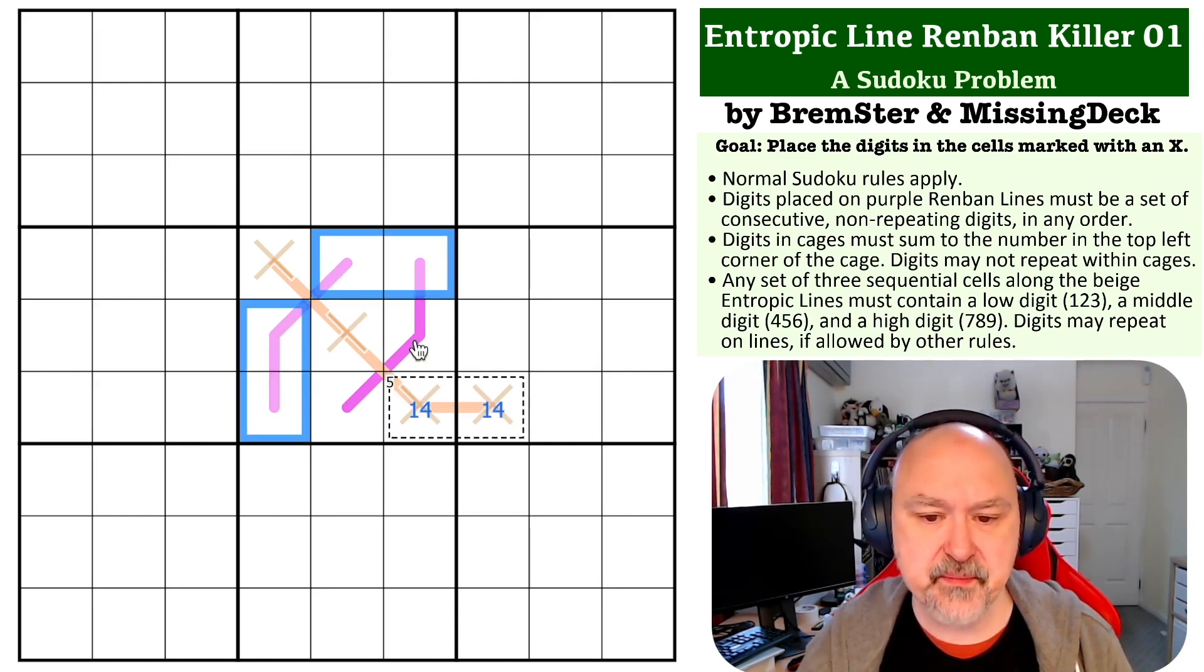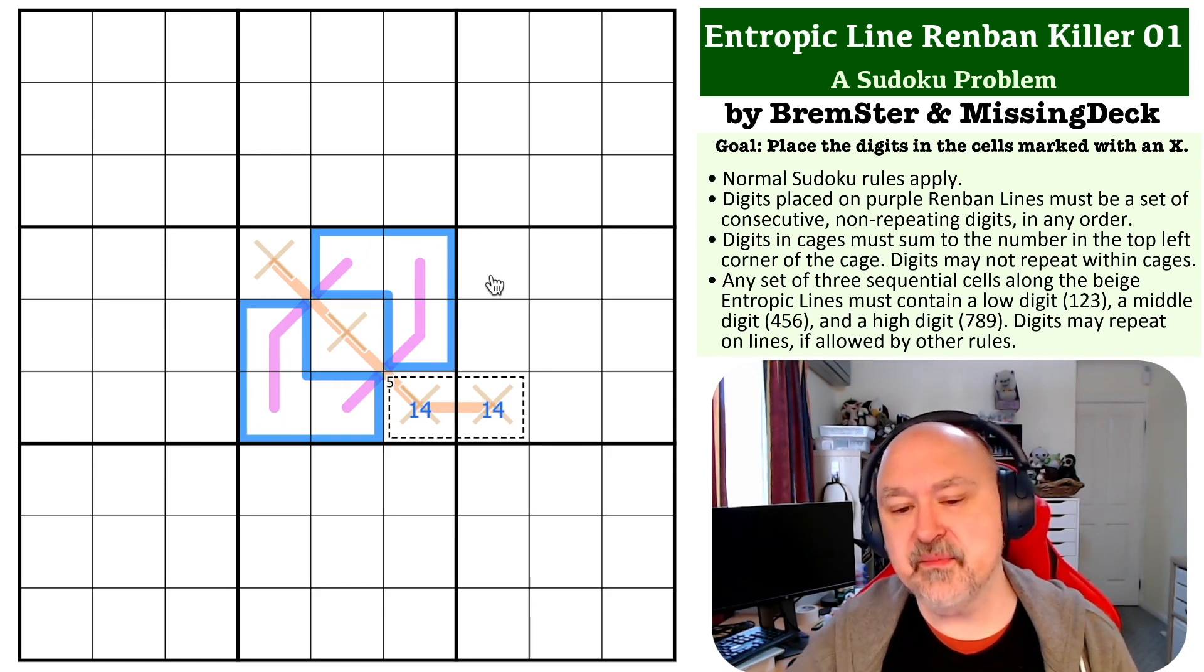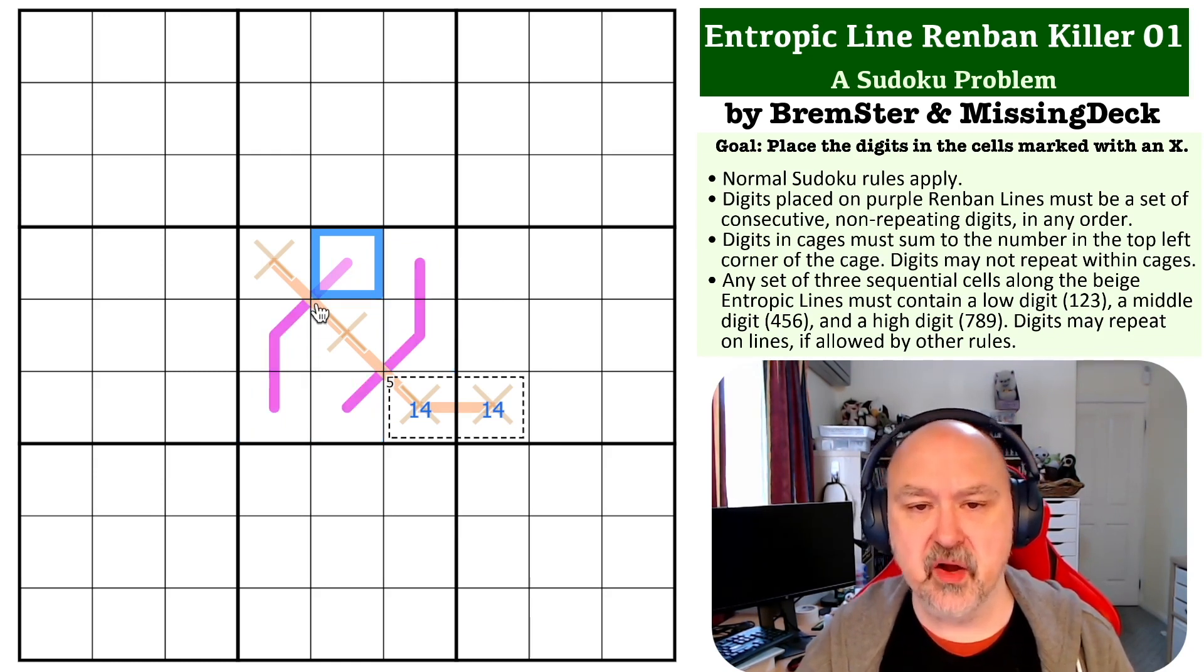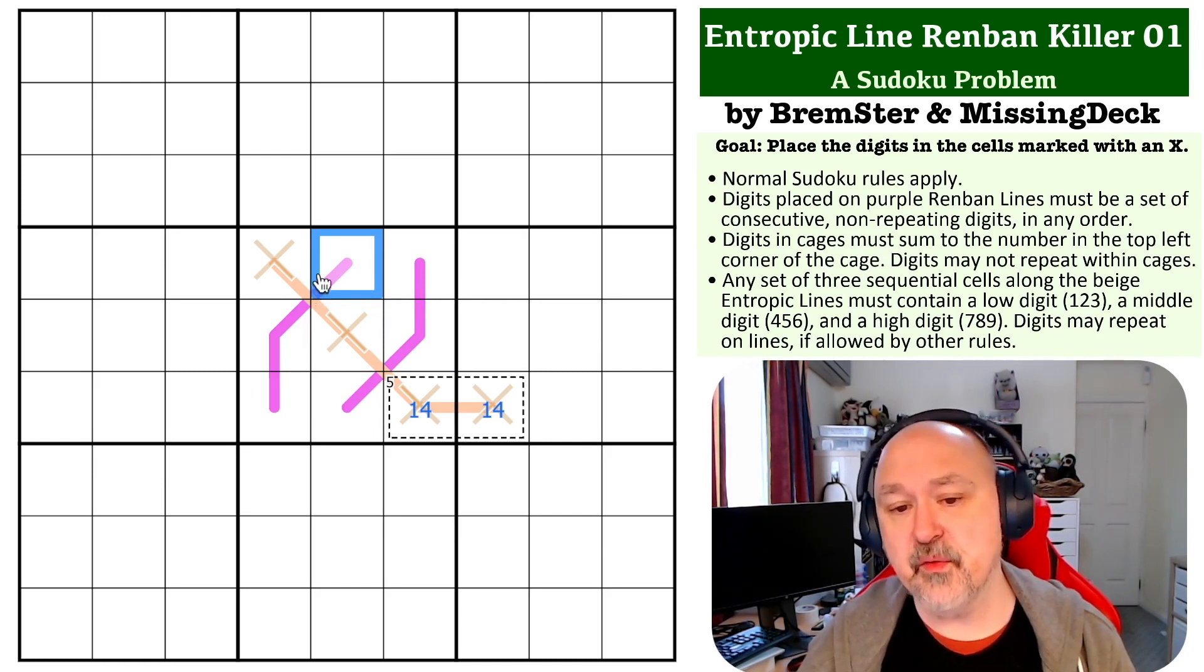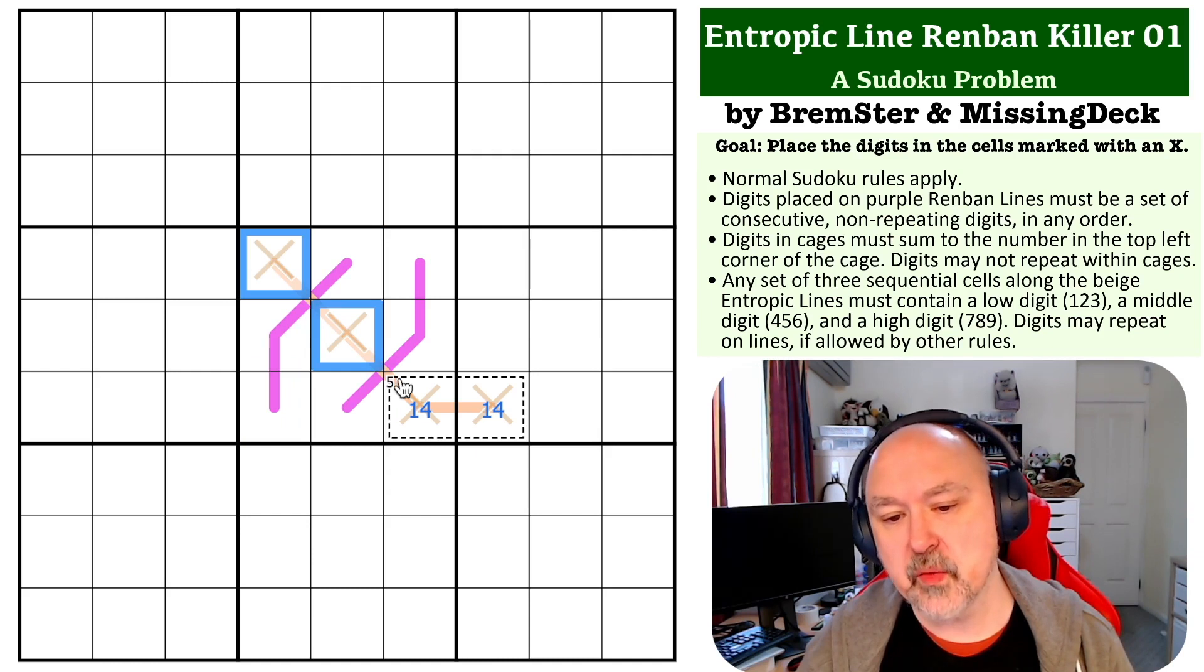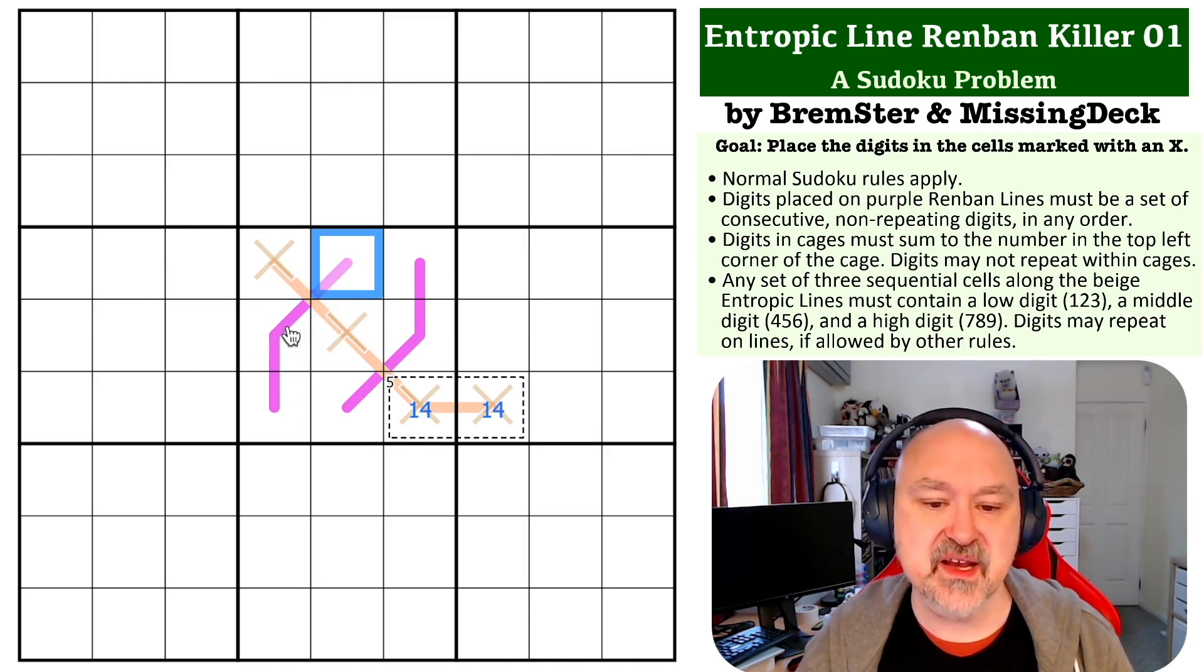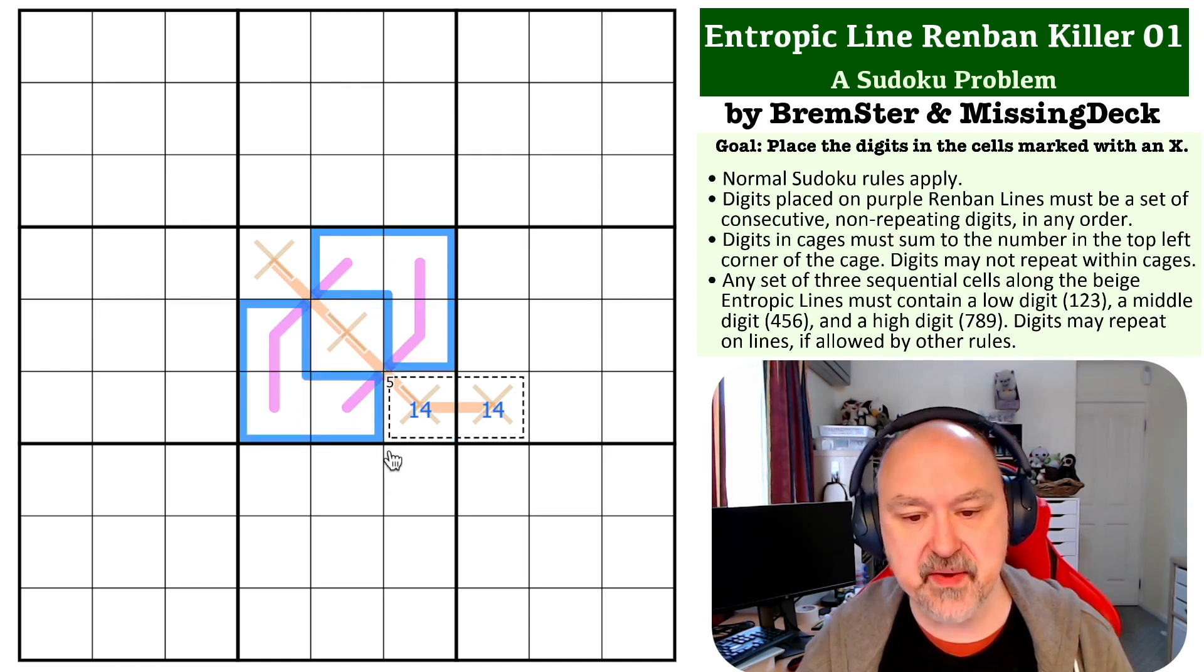Now we want to think about these Renban lines, because what happens if you put a 1 on one of these Renban lines? Well, then the Renban line, in order to form a set of consecutive digits, would have to be 1, 2, 3. But if we put 1, 2, 3 on this Renban line, what are we going to put as a low digit onto that entropic line? There'd be nothing left, because we've used all the low digits. So we can never put a 1 on any of these Renban lines.